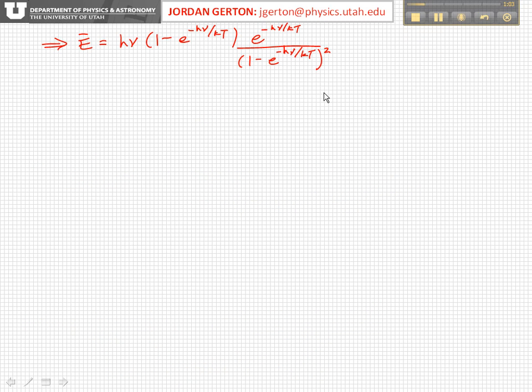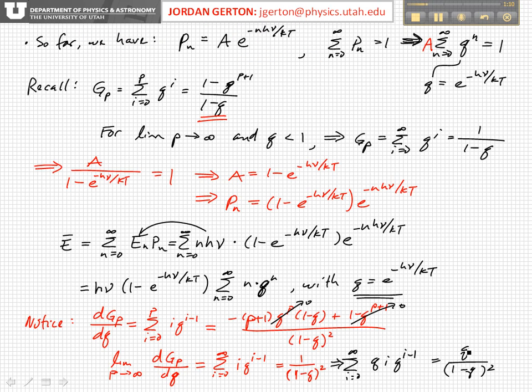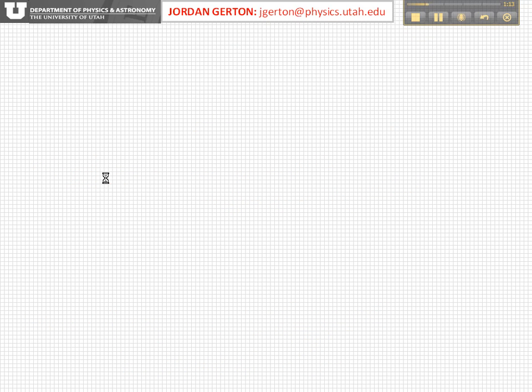So here I've written that down. I'm just plugging in for q now. q is e to the minus h nu over kT, and so we get this pre-factor out here which we'd factored out of the sum before. And now we get e to the minus h nu, and this is just q.